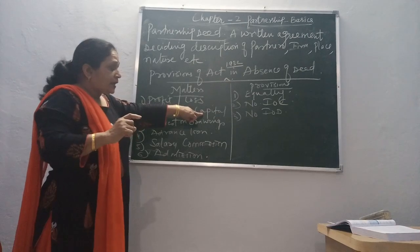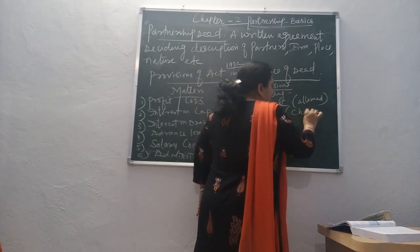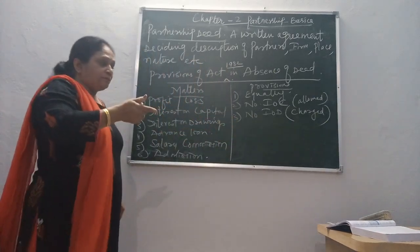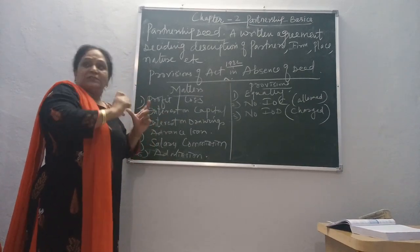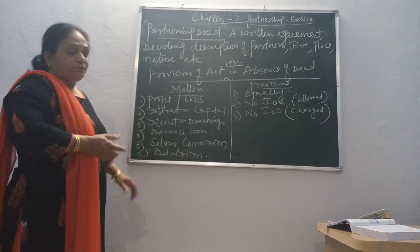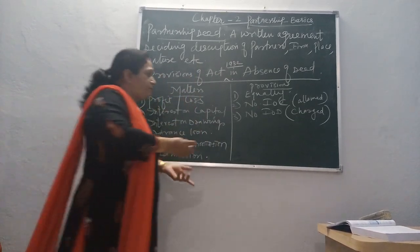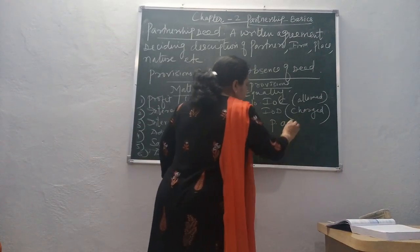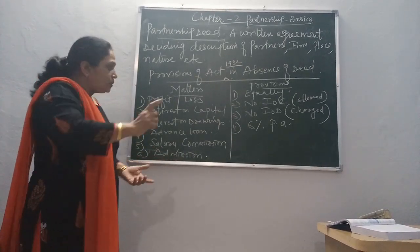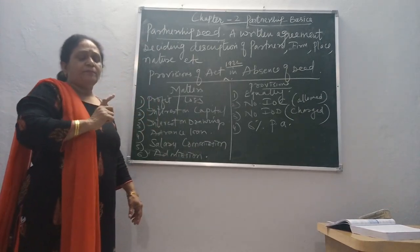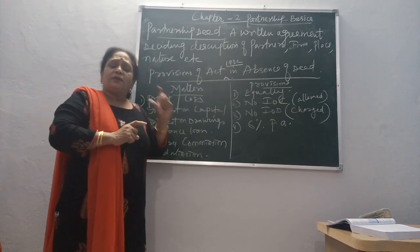Interest on capital is given to the partners by the firm, while interest on drawings is given by the partners to the firm — so they are opposite in nature. Regarding an advanced loan: if a partner has advanced a loan to the firm and the deed is silent, interest will be provided at 6% per annum. No partner can claim a higher rate; he cannot demand 10%, only 6% per annum for the period of the loan.